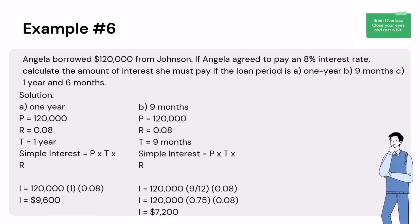Solution B — 9 months: P = $120,000, rate = 0.08, time = 9 months. Using SI = P × T × R: 120,000 × (9/12) × 0.08 = 120,000 × 0.75 × 0.08 = $7,200. If the time is given in months, divide the number of months by 12 since there are 12 months in a year. Therefore, Angela will pay an interest of $7,200 in 9 months.